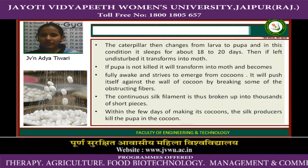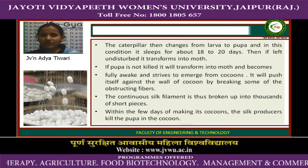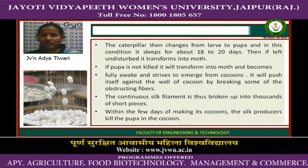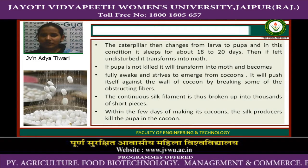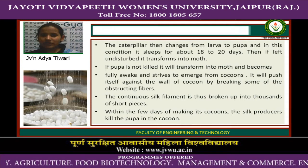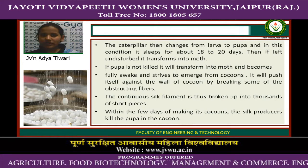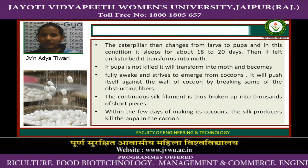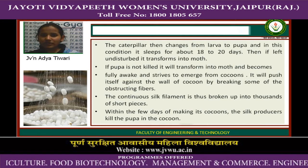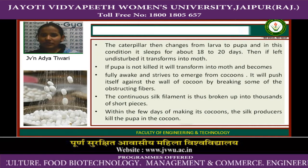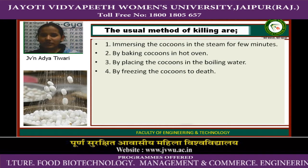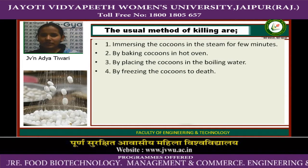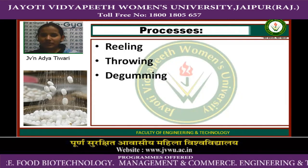In the pupa condition, it sleeps for about 18 to 20 days. If left undisturbed, it transforms into a moth. If the pupa is not killed, it will become fully active, emerge from the cocoon by pushing against its walls and breaking some obstructing fibers, thus breaking the continuous silk filament into thousands of short pieces. Within a few days of making its cocoon, silk producers kill the pupa. Methods of killing include immersing cocoons in steam for a few minutes, baking in a hot oven, placing in boiling water, or freezing to death.